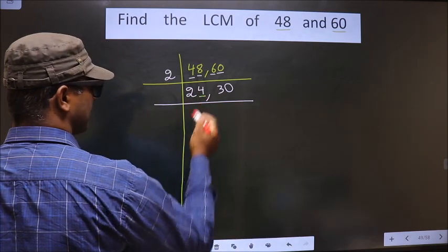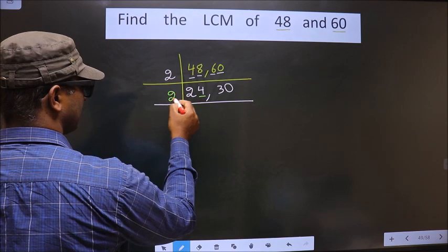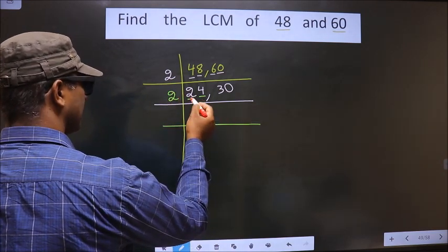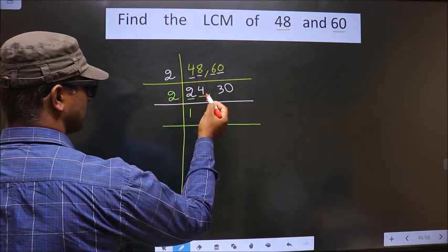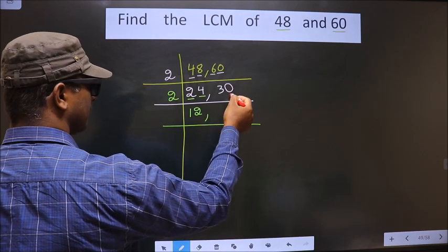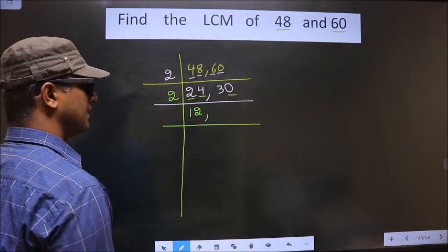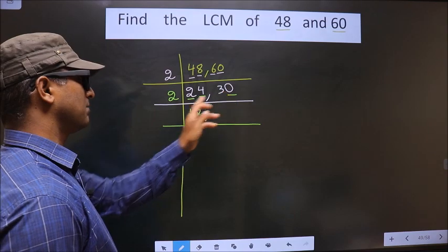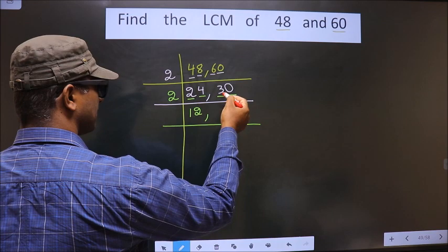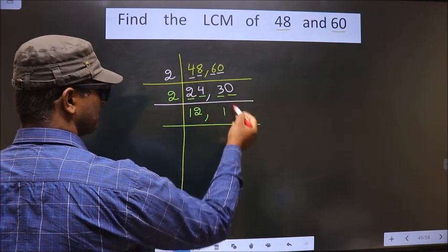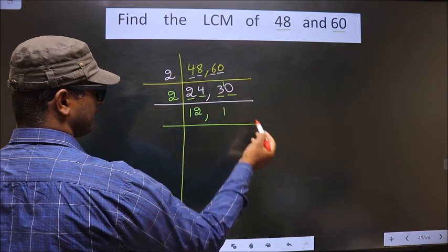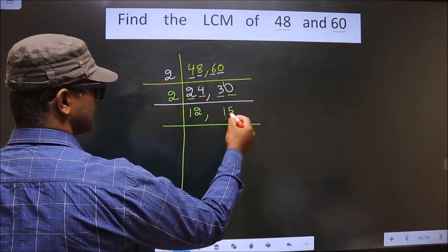Now in this number, the last digit is 4, which is even. So we take 2 here. The first number is 2 — 2 ones are 2. The next number is 4 — 2 twos are 4. The last digit of the other number is 0, so it is also divisible by 2. The first number is 3. The closest number to 3 in the 2 table is 2 ones are 2. 3 minus 2 is 1, carried forward making it 10. 2 fives are 10.